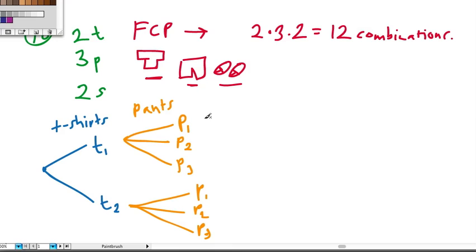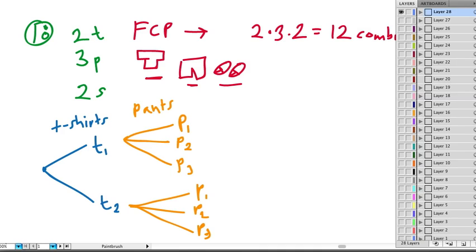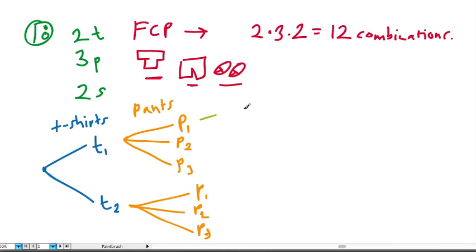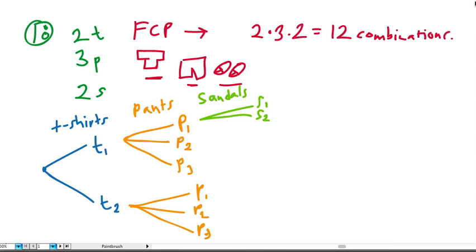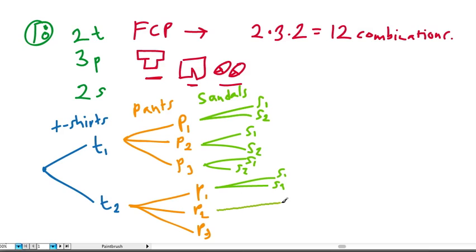Finally, after choosing pants, he has to decide which sandals he wants. So for each pants choice, he could have sandals number 1 or sandals number 2. This sandals layer is repeated for every branch — for each combination of t-shirt and pants, there are two sandal options.